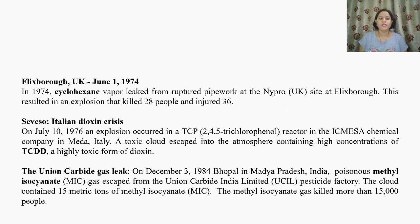Another industrial disaster happened in Flixborough, UK in 1974. Cyclohexane vapor leaked from a ruptured pipework at the site, resulting in an explosion that killed 28 people and injured 36. In Italy, a dioxin crisis occurred in Seveso on July 10, 1976. An explosion occurred in a TCP-245 trichlorophenol reactor in a chemical company in Italy. A toxic cloud escaped into the atmosphere containing high concentrations of TCDD, which is a highly toxic form of dioxin.